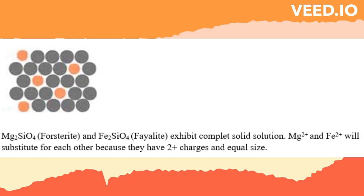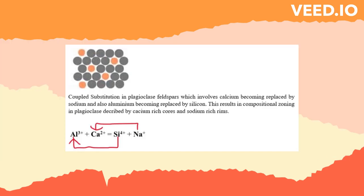Coupled Substitution: Coupled substitution occurs if an ion of a different charge is substituted. This results in having to make another substitution to maintain the charge balance. Cations of different charges are substituted for each other, which requires two coupled substitutions to maintain charge balance.